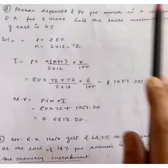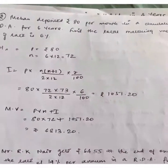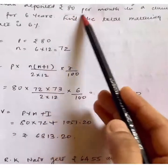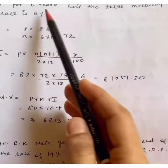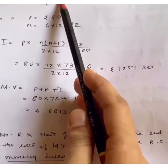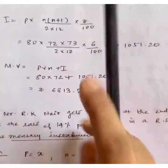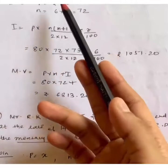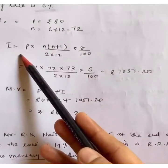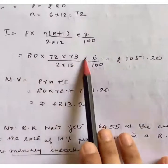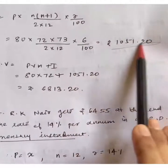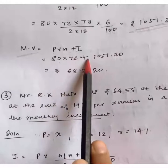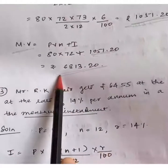Next sum: Mohan deposited Rs.80 per month in a cumulative deposit account — same as a recurring deposit account — for a period of 6 years. Find the total maturity value if the rate is 6%. Here P = 80, N = 6 × 12 = 72 months, and R = 6. Interest = 80 × 72 × 73 / (2 × 12) × 6/100 = Rs.1051.20. Maturity value = 80 × 72 + 1051.20 = Rs.6813.20.